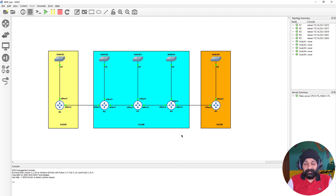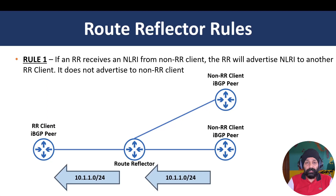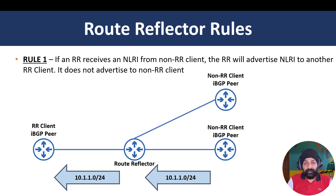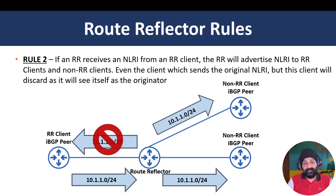Rule number one: if an NLRI (network layer reachability information) is received from a non-route reflector client, it will only be advertised to route reflector clients — it will not be advertised to non-route reflector clients. So if a router acting as a route reflector receives a BGP advertisement from a non-RR client, it will only pass it to RR clients.